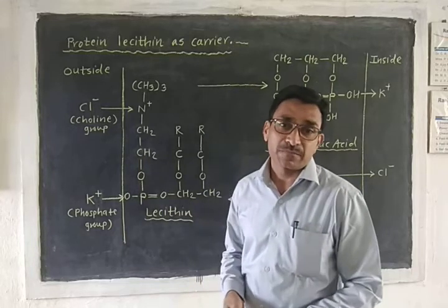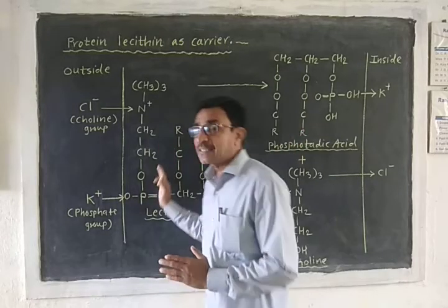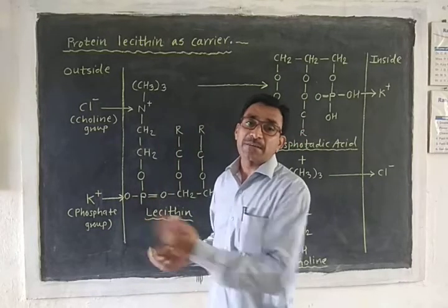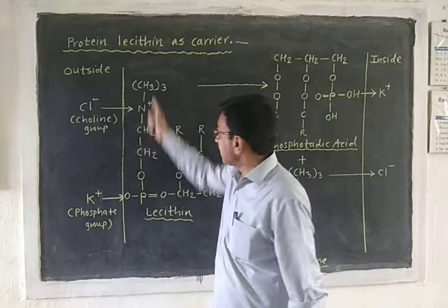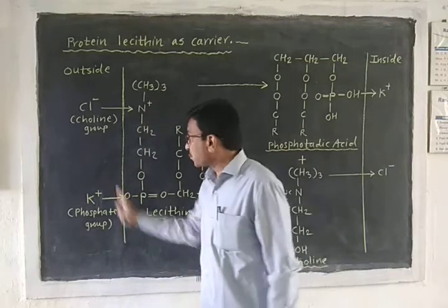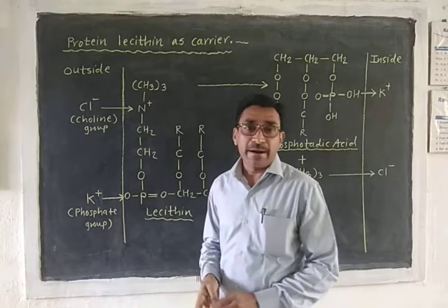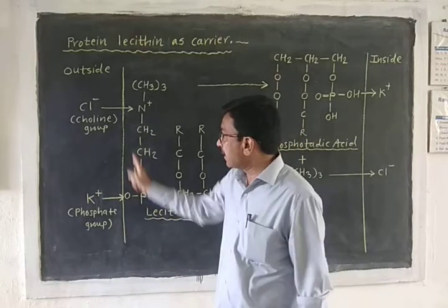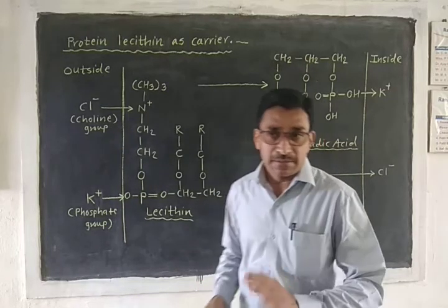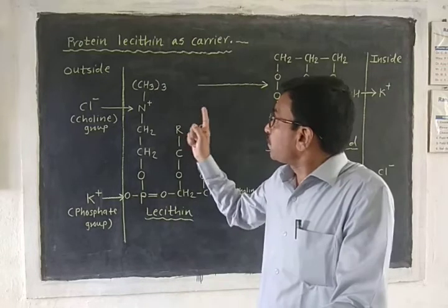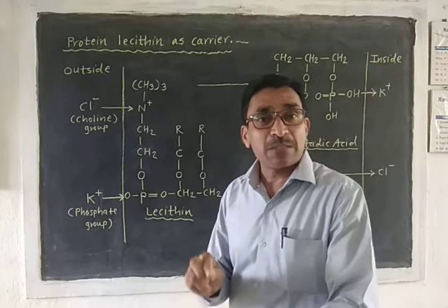Lecithin is amphoteric because it has two groups: the phosphate group and the choline group. The phosphate group acts as a binding site for cations, while the choline group of the lecithin acts as a binding site for anions.